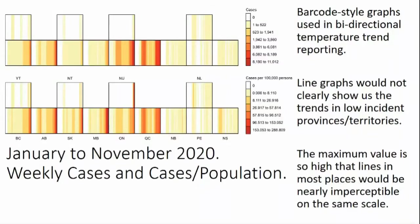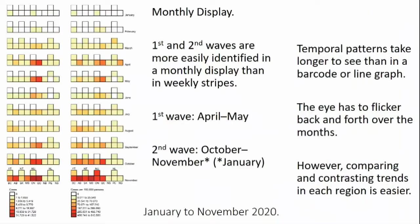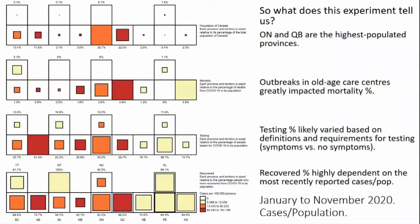The top map shows the absolute number of cases, while the bottom shows cases relative to each province or territory's population. Ontario and Quebec, with the largest populations, had the most cases. Relative to population, western provinces were hit just as hard as central Canada, while Atlantic Canada and the territories were virtually unscathed until Nunavut's outbreak in November. I used vertical barcode stripes after seeing them used in climate graphs. Line graphs would not have worked as well for provinces with very low values. Moving on to a monthly display, we can more easily identify where the first and second waves occurred.